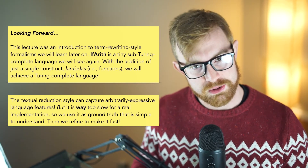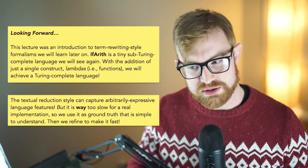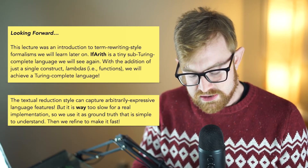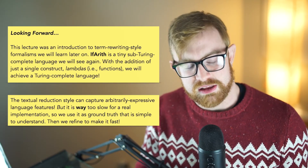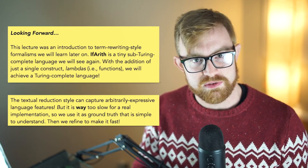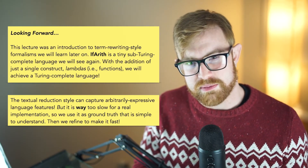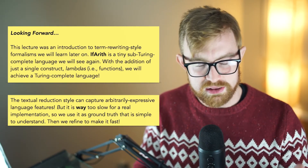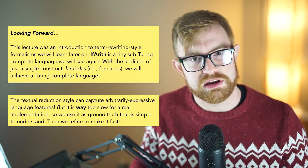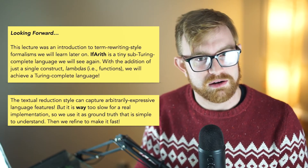Looking forward a little bit: this lecture was meant to introduce this really small language named ifarith. It's a really tiny, not-quite-Turing-complete language. Notably missing from this language is loops, for example. If you don't have loops, you can't really do interesting computation — you can really only do straight-line computation or decision-tree style computation, the kinds of things you might see in a lot of machine learning models.